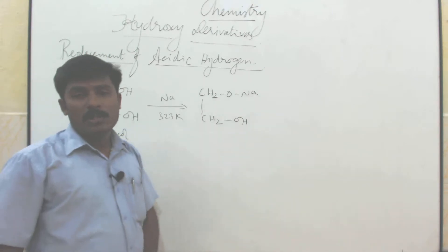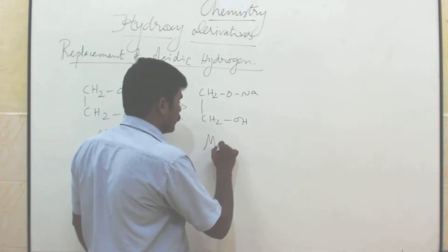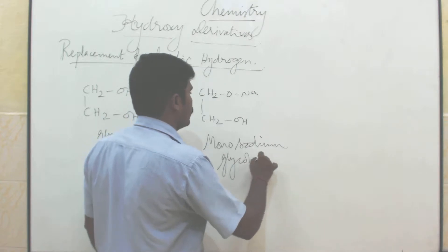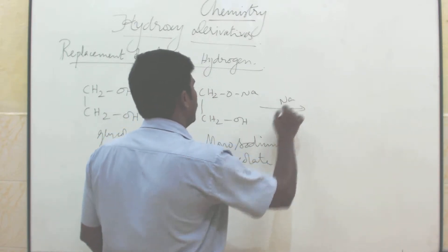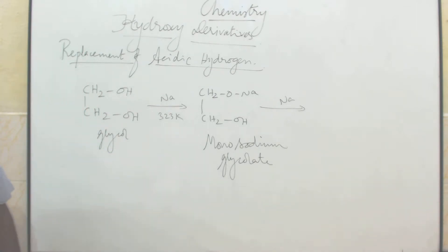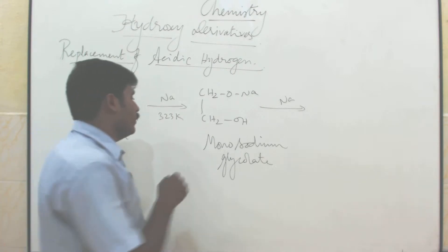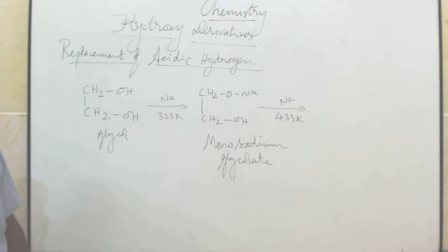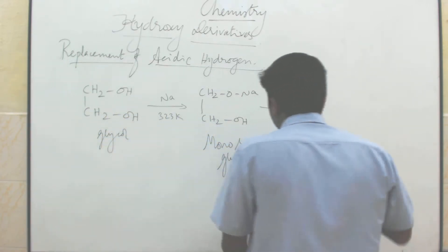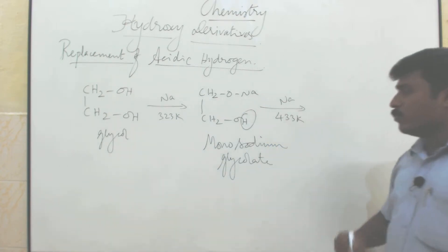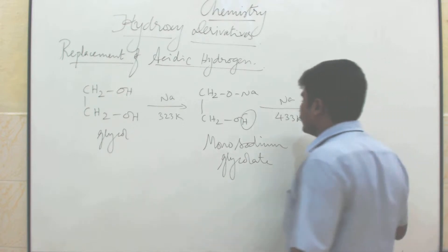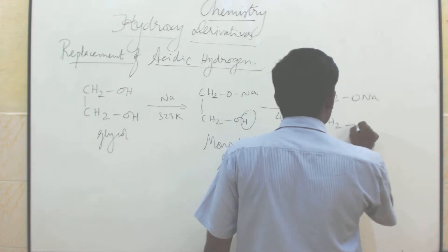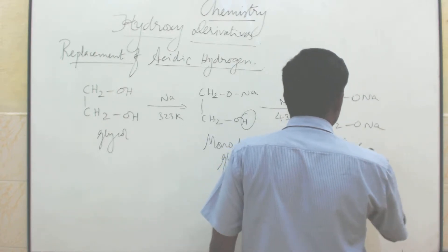Only 1 sodium, so the name is monosodium glycolate. Followed by again sodium — we are going to increase the heat from 323 to 433 Kelvin. One more acidic hydrogen is also replaced by sodium atom, so we get disodium glycolate, formula CH2ONa bond CH2ONa.